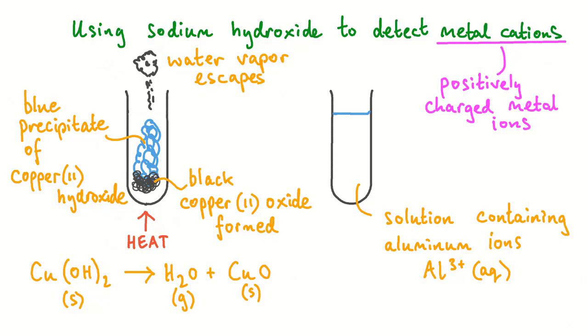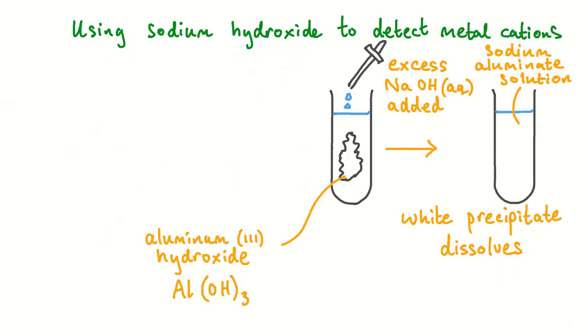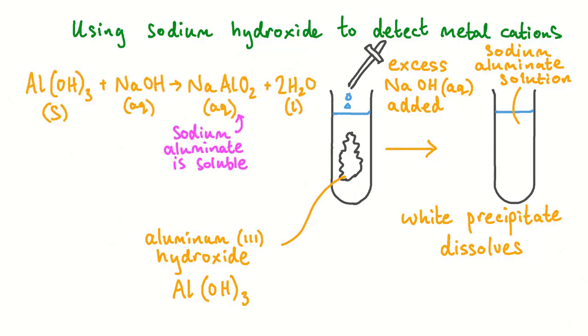In the reaction of aqueous aluminum 3 plus ions with aqueous sodium hydroxide, a white precipitate of aluminum 3 hydroxide is seen to form. This is not a unique result as many other metal cations produce white precipitates with sodium hydroxide solution. In this case though, the aluminum 3 hydroxide will dissolve if excess sodium hydroxide is added to it. Aluminum 3 hydroxide reacts with the excess sodium hydroxide to form a solution of sodium aluminate. Sodium aluminate is both soluble and colorless.